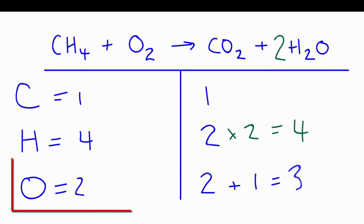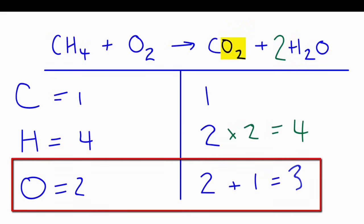The problem is, though, that I still have the two oxygens with the carbon dioxide, but now I have two times the oxygen. So this becomes two, which means two plus two. I have a total of four oxygens on the product side.